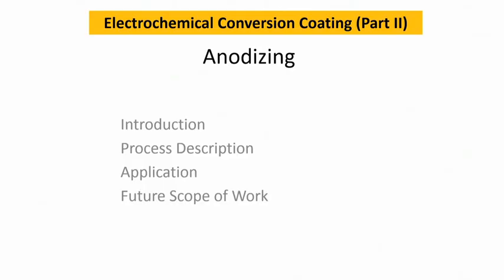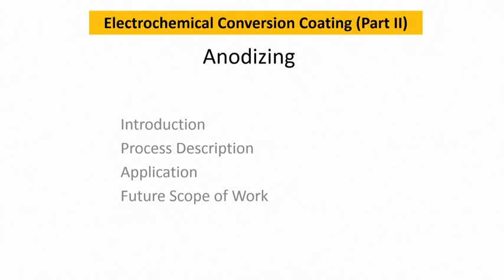In this talk we will discuss the Electrochemical Conversion Coating, which deals with techniques where you use electrochemical means to form a compound layer on the surface of metallic materials. Among all electrochemical conversion coatings, anodizing is very popular. As the name implies, this technique is called anodizing because the component is used as the anode in the electrochemical cell. The oxygen produced at the anode reacts with the metal surface to form its oxide.